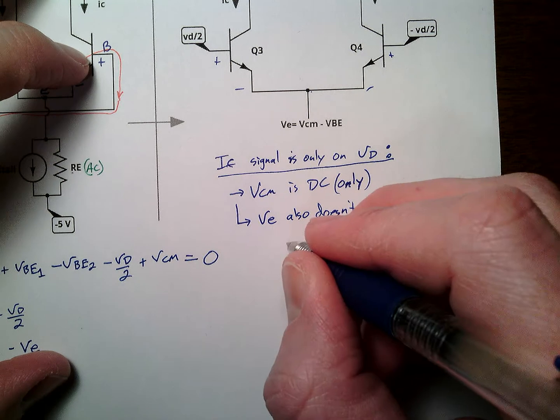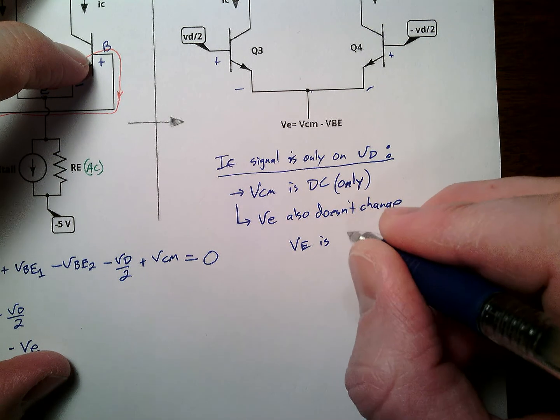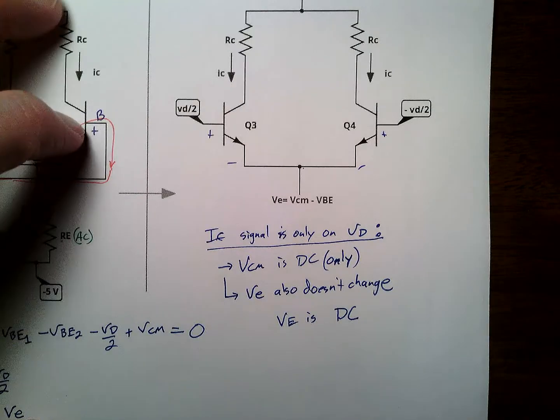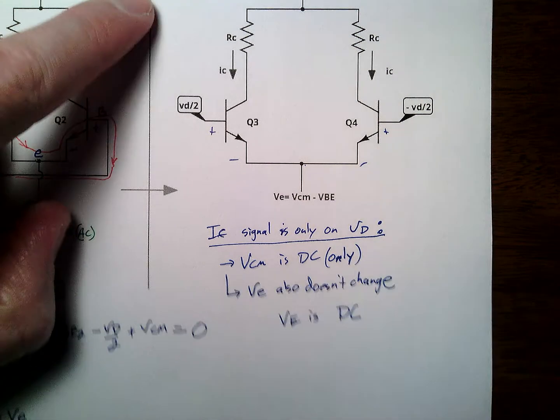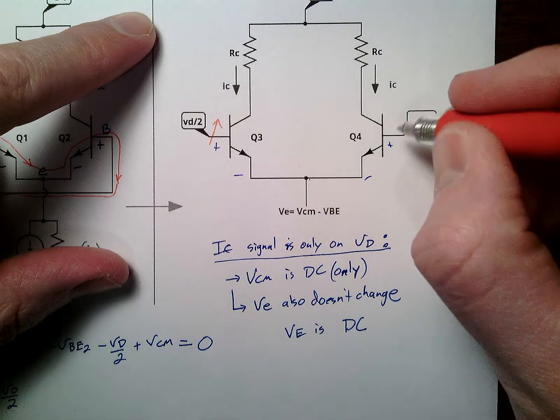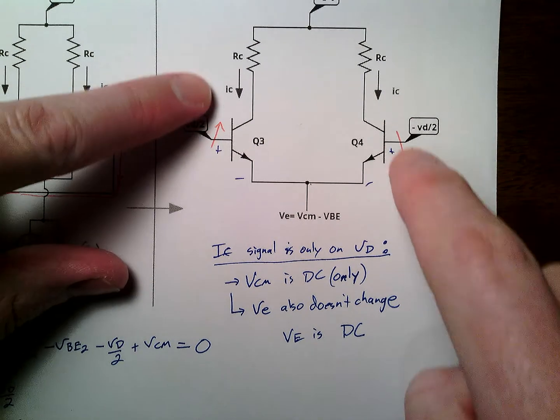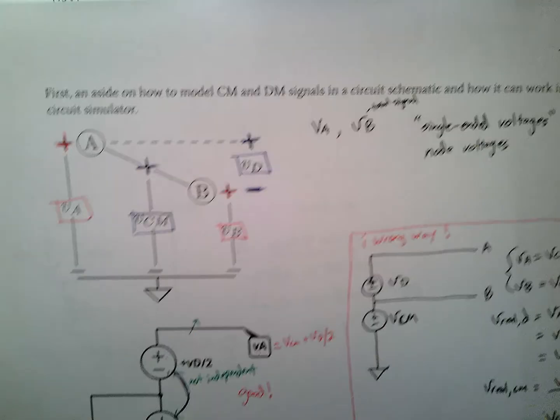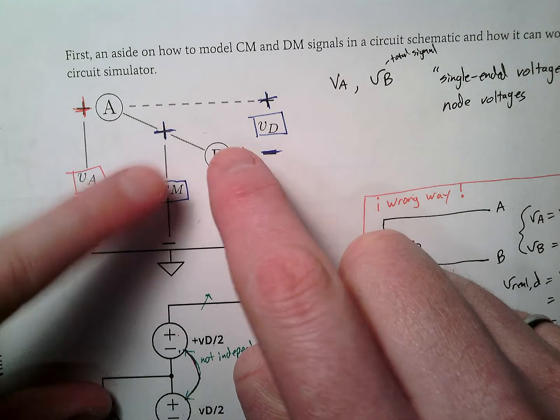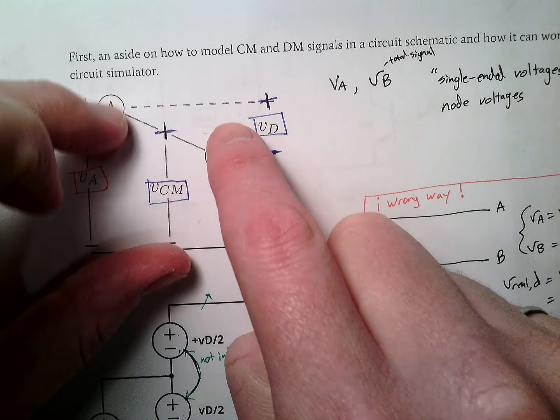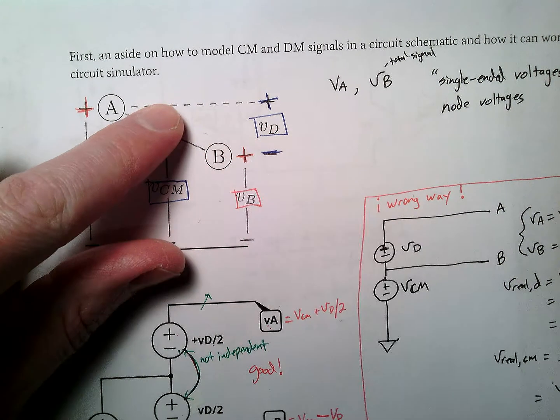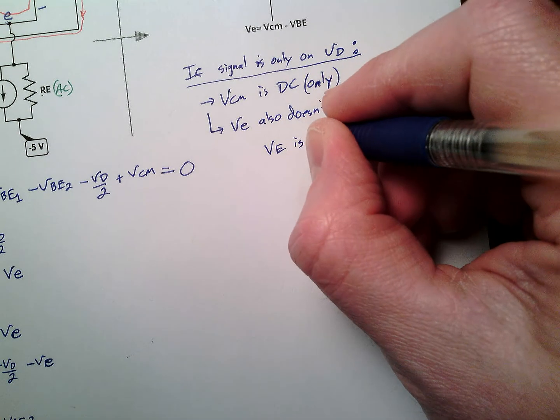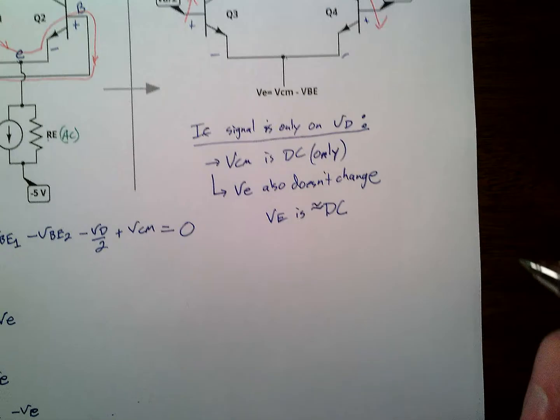Okay? Can you see, it doesn't change? So VE is DC. It doesn't change. Right? Don't change. This is how we do it. VD over 2 goes up this way. Minus VD over 2 goes down. So when VD changes, they go equal and opposite, equal and opposite, equal and opposite. We've seen this in our seesaw model here. When VD is changing, but VCM is staying the same, we have equal, opposite, equal, opposite. So it's like the fulcrum. Is pseudo, pseudo DC.